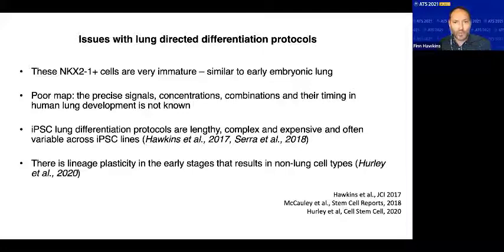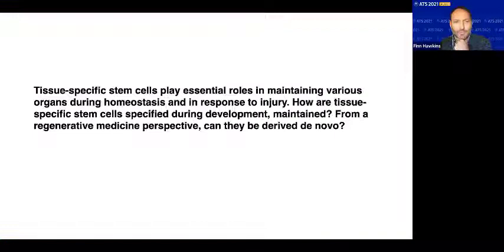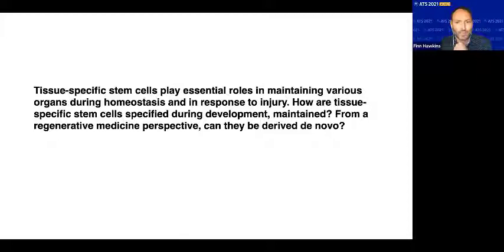Now on to the main part of my talk, which will focus on airway stem cells and their derivation from iPSC cells. We've talked about pluripotent stem cells, which can differentiate into all three germ layers. But now I'm going to talk about adult or tissue-specific stem cells — an entirely different category. These are specific to an organ or tissue, and they play essential roles in maintaining the organ during homeostasis and in response to injury.